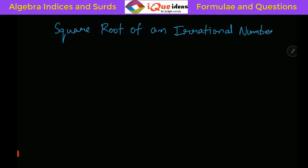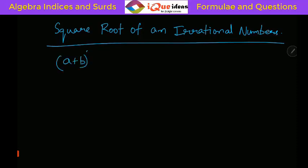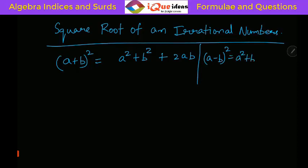Before that I will just recall the formula: (a + b)² equals a² + b² + 2ab. Similarly, (a - b)² equals a² + b² - 2ab.